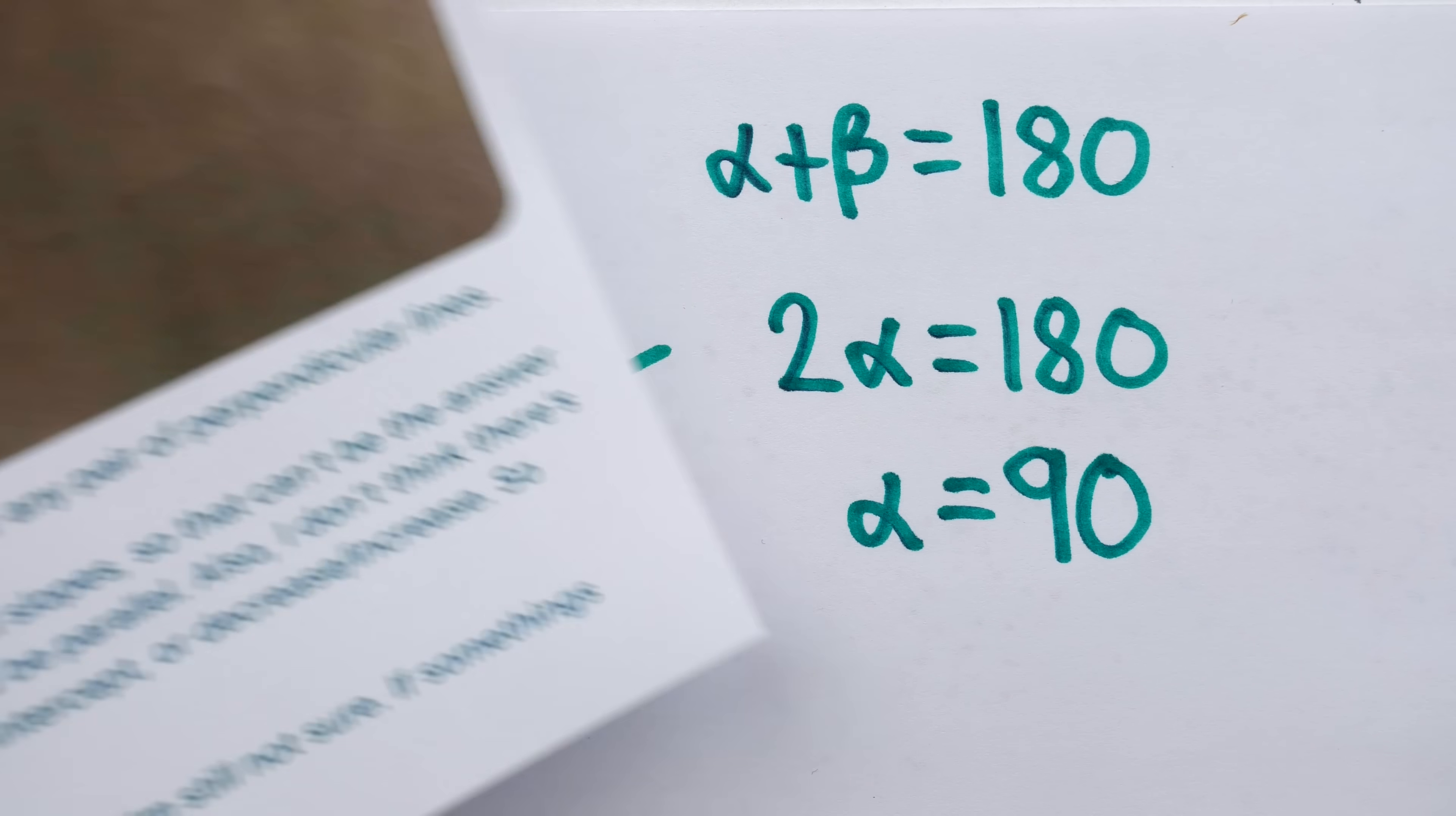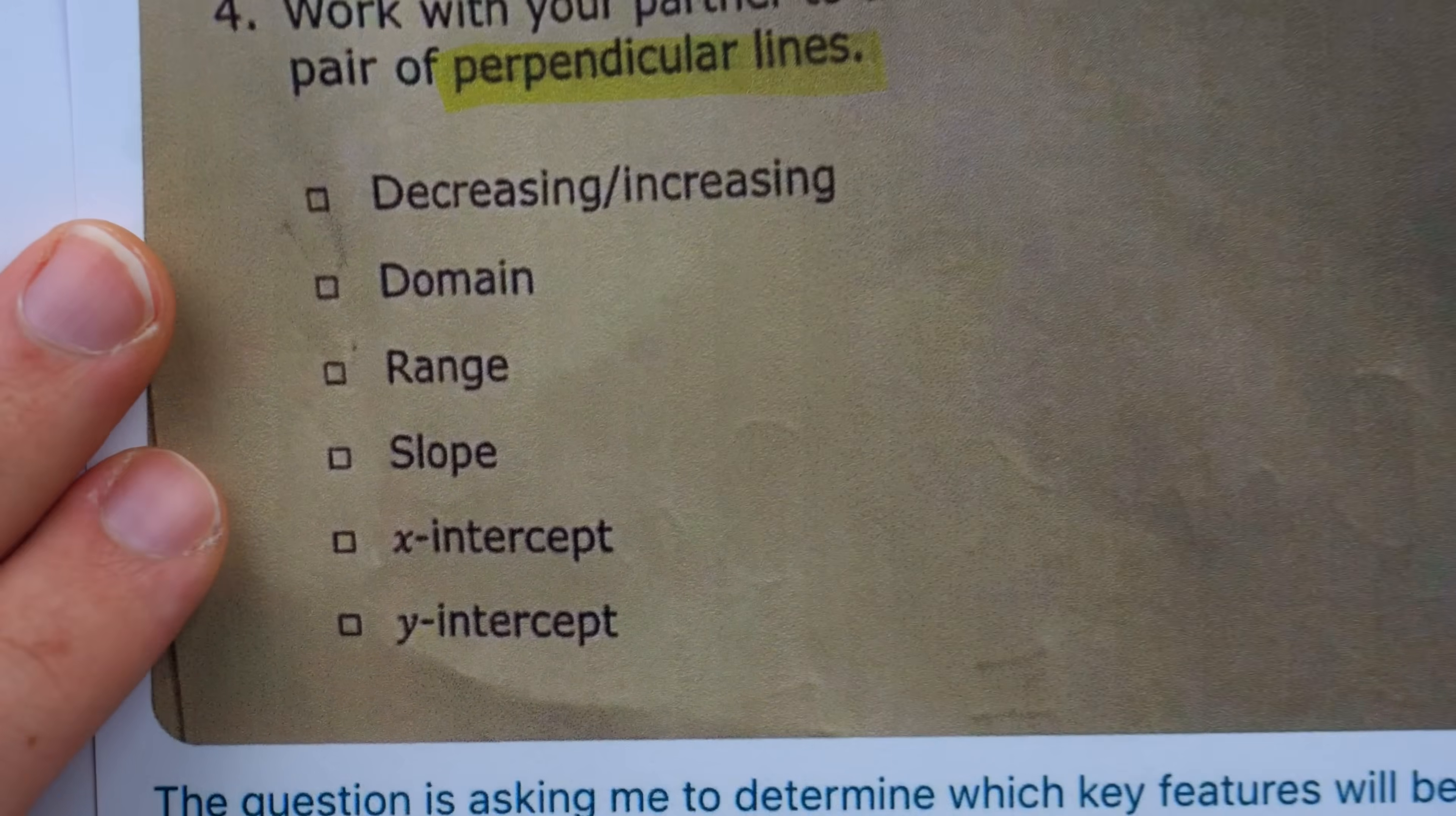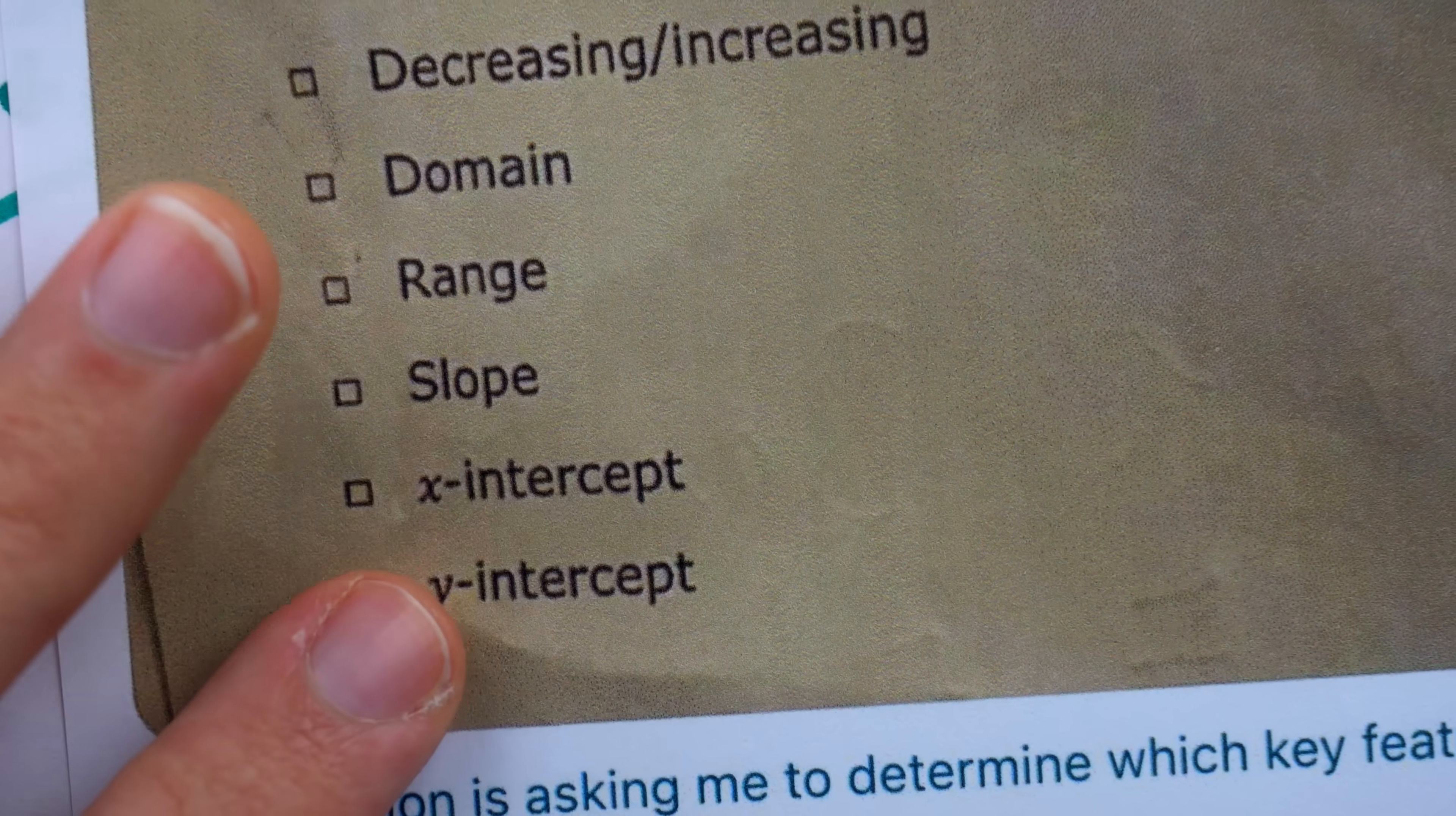Knowing what perpendicular lines are, let's see which of these options we can knock out. Let's start with slope. Will the slope of a pair of perpendicular lines always be the same? Of course not.